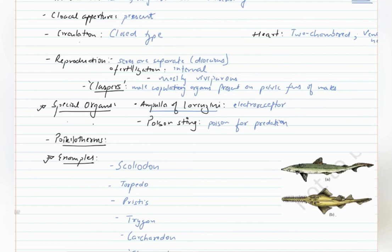They are poikilotherms. Poikilotherms means they cannot maintain a constant body temperature. The temperature of the body will change with the change in environmental temperature. This is in contrast to homeotherms which can regulate their body temperature such as humans. Humans have a constant body temperature irrespective of the external environment temperature, but these animals lack this ability and are known as poikilotherms.